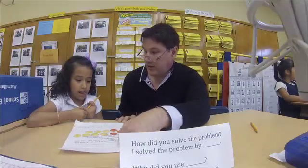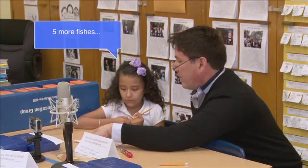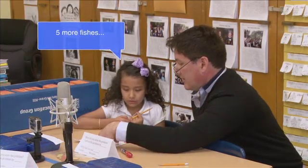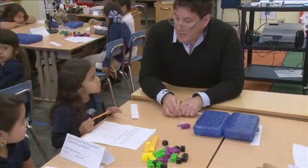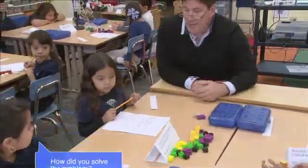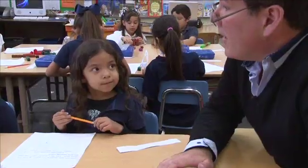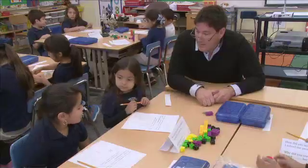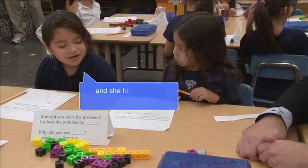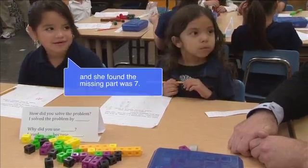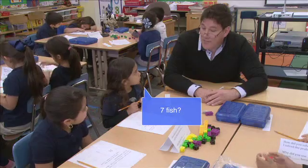So why did you choose five counters? Because it says five. I solved the problem by using fish. Five more fish joined them. Did you ask each other questions? You asked Brittany how she solved the problem. How did you solve the problem? She found that the missing part was seven. What does that seven mean in the problem? Seven fish — seven fish were there before.